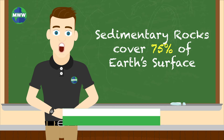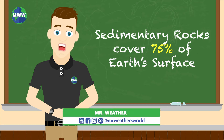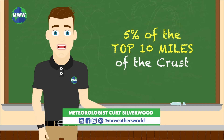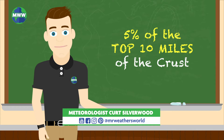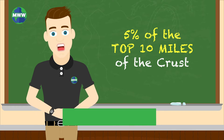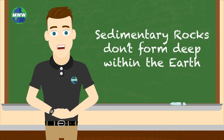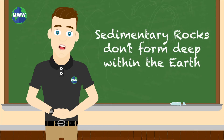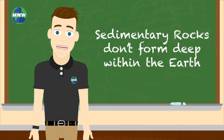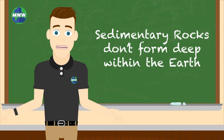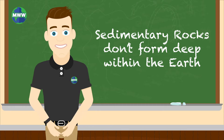Sedimentary rocks cover 75% of the earth's surface but only make up 5% of the top 10 miles of the crust. They're different from igneous and metamorphic rocks because they don't form deep within the earth.